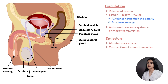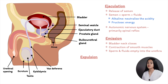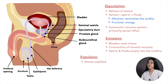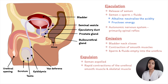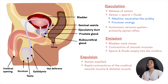In the expulsion phase — right after emission — semen is expelled from the urethra through rapid and rhythmic contractions of the urethral smooth muscle and the skeletal muscle at the base of the penis. This is what is known as an orgasm. After ejaculation, there is a refractory period during which a second erection is not possible.